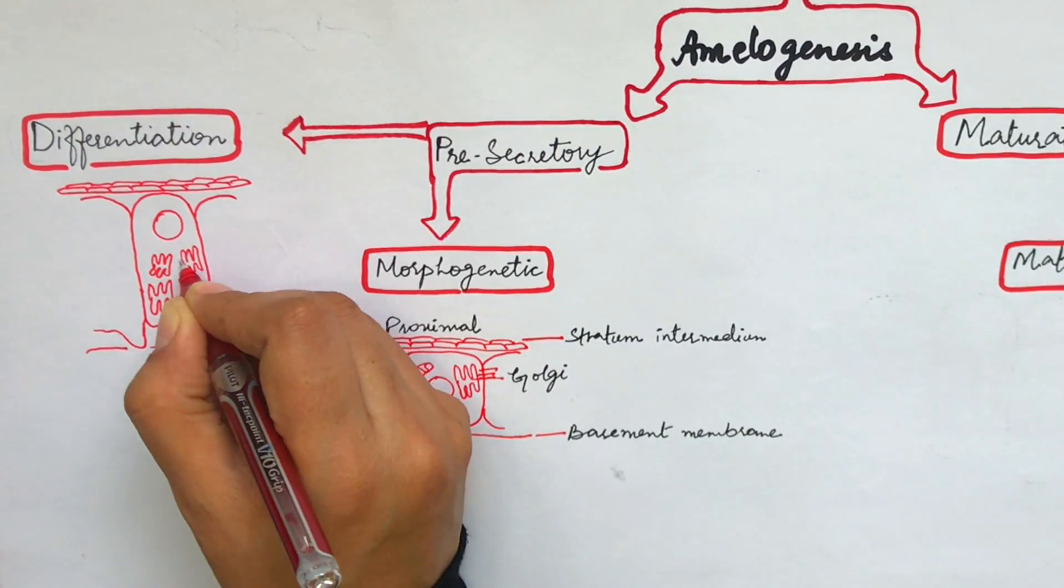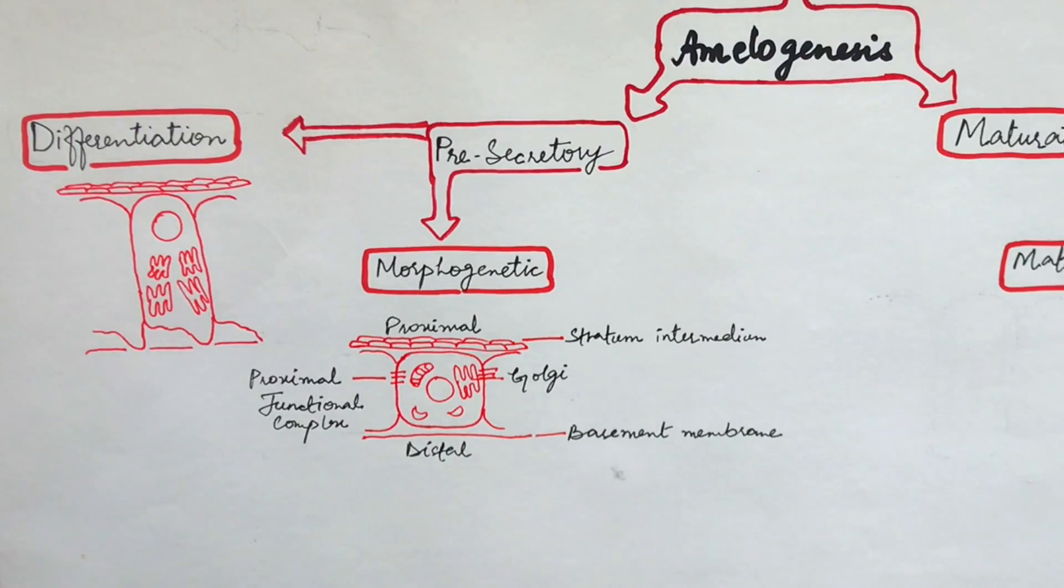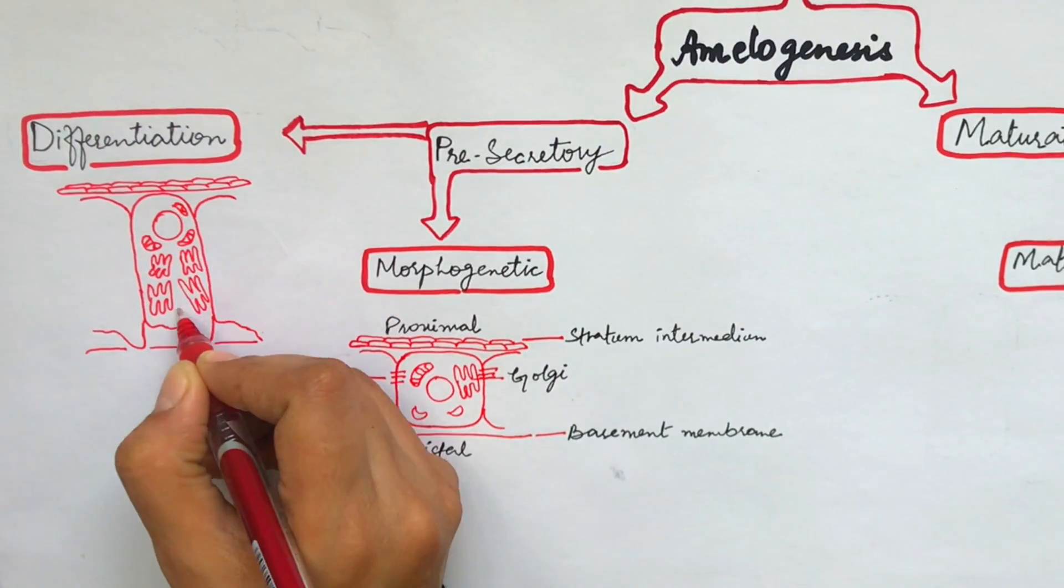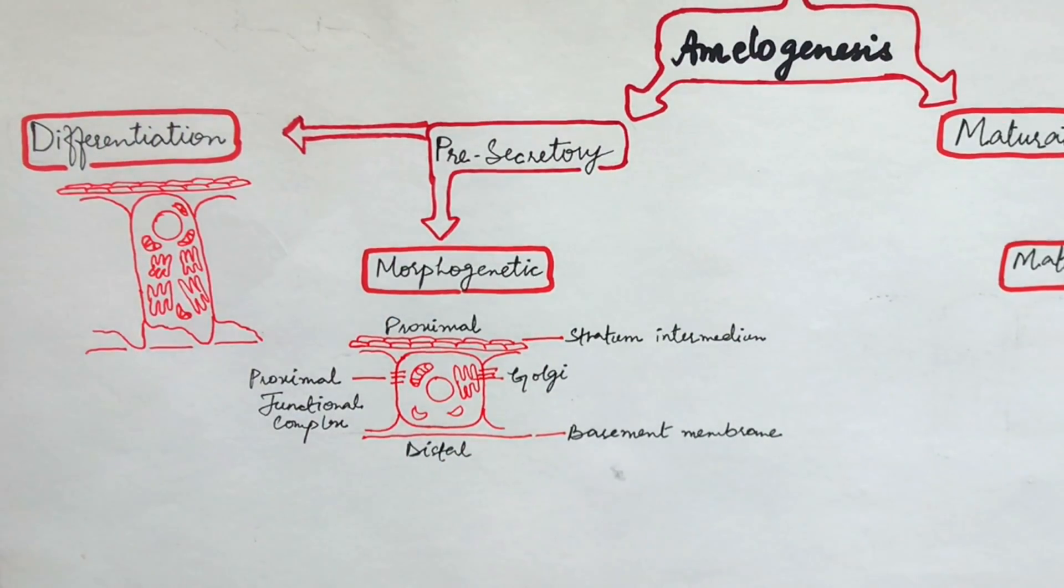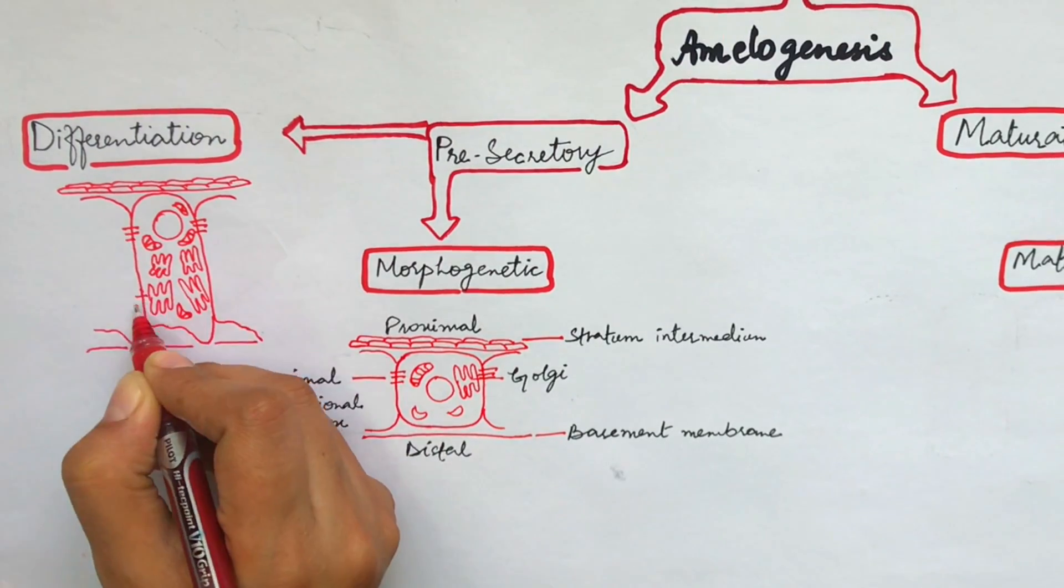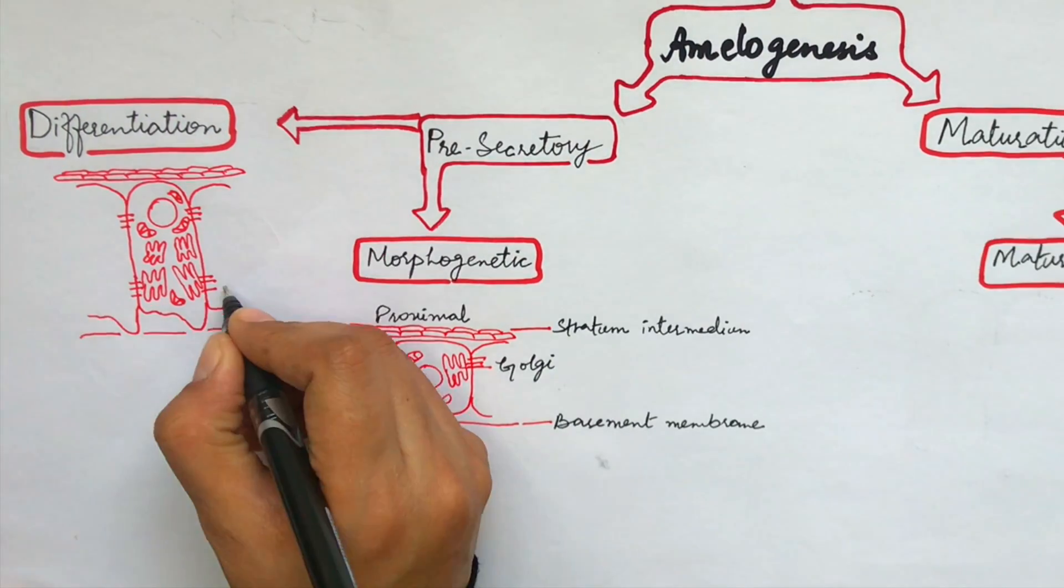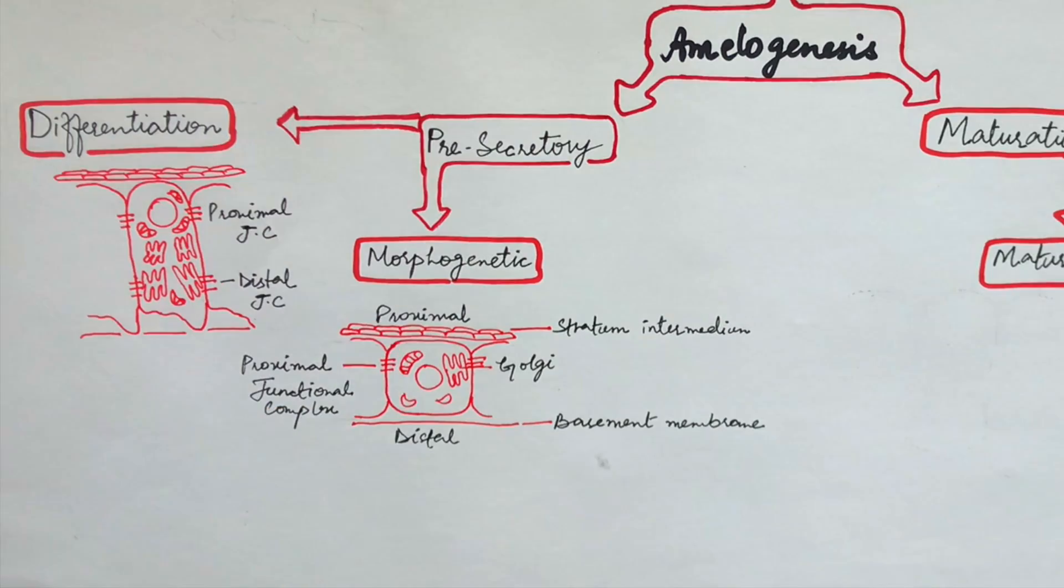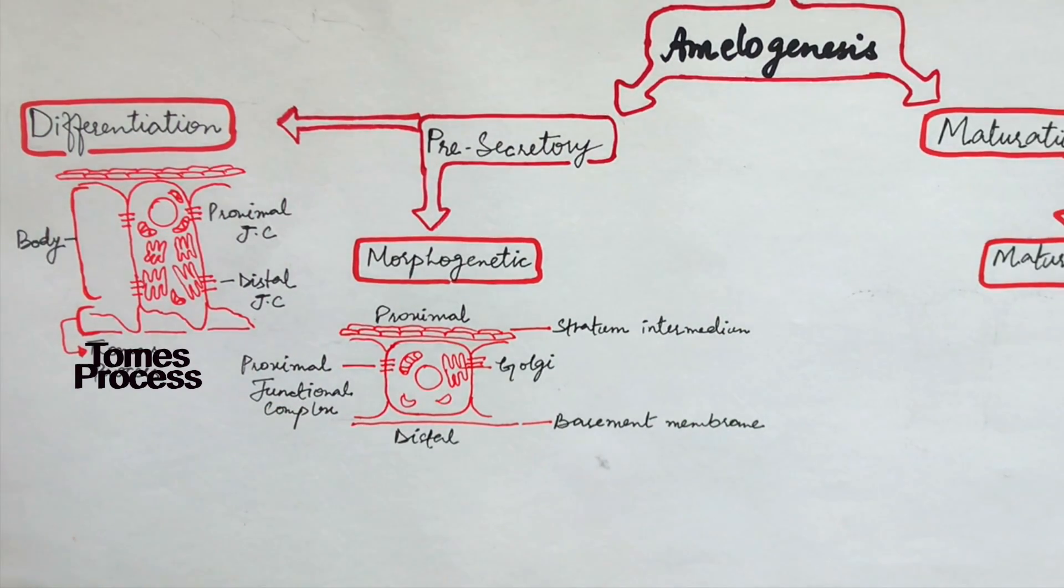The Golgi complex increases in volume and shifts distally. Clusters of mitochondria are found surrounding the infranuclear compartment. A second junctional complex develops at the distal extremity of the cell. This distal junctional complex divides ameloblasts into a body and a distal extremity called Tomes' process. The Tomes' process is not fully developed at this stage.